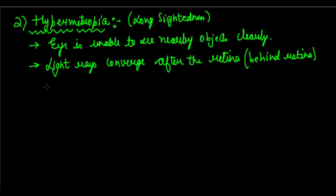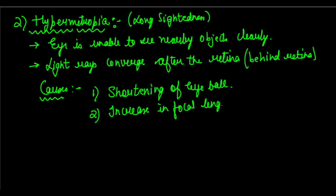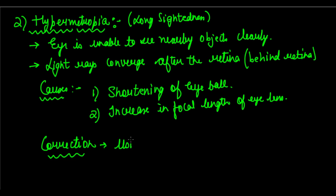The causes of hypermetropia are: first, shortening of the eyeball — the eyeball becomes short and shrinks (opposite of myopia); and second, increase in focal length of the eye lens. The correction uses a convex lens, which converges the incoming light rays slightly before they enter the real eye lens, so that ultimately they converge properly onto the retina.